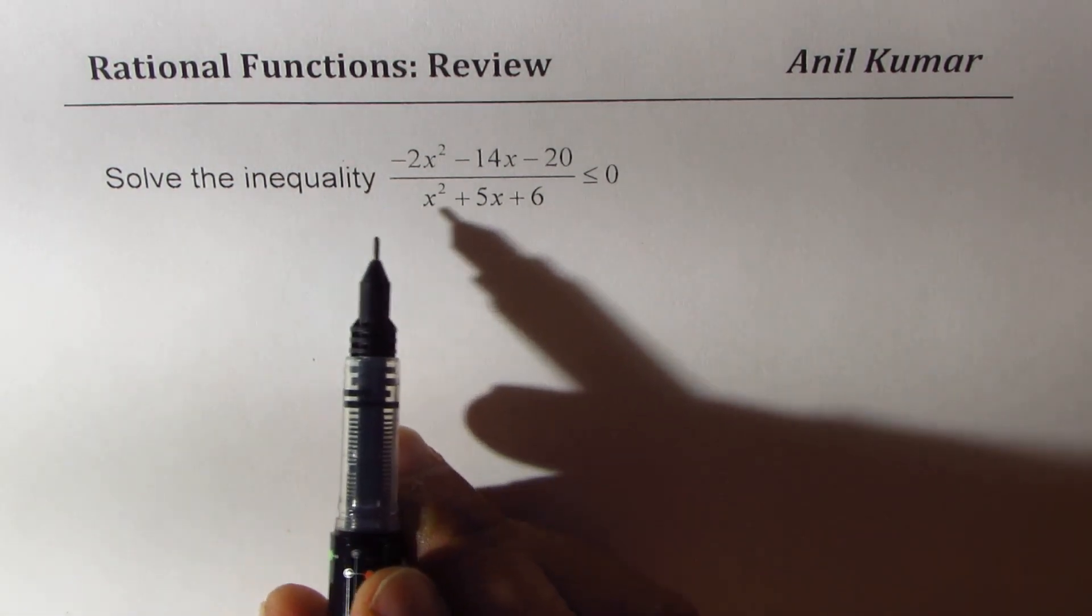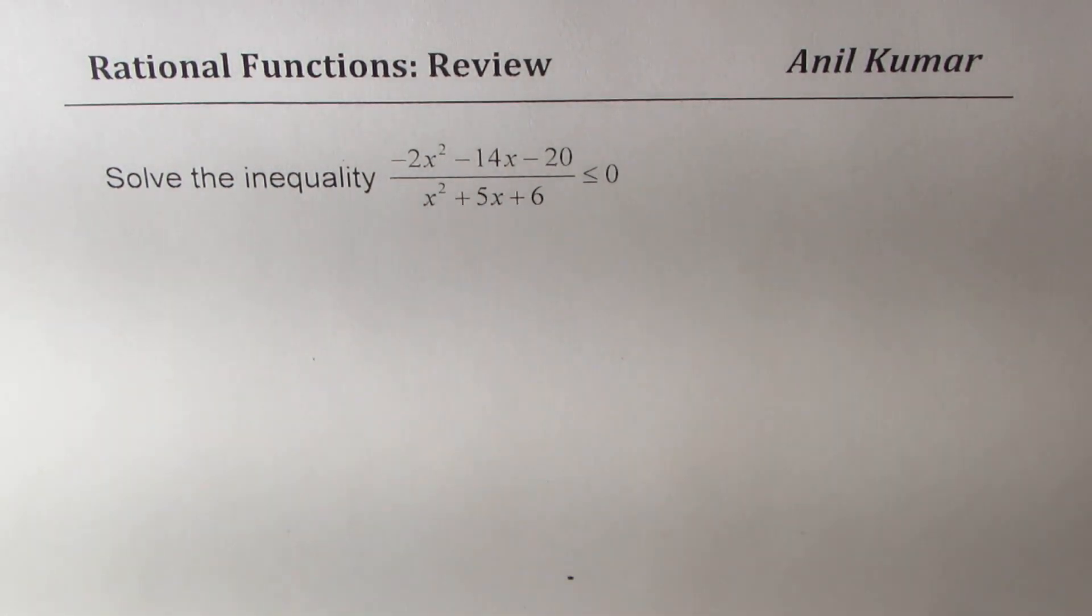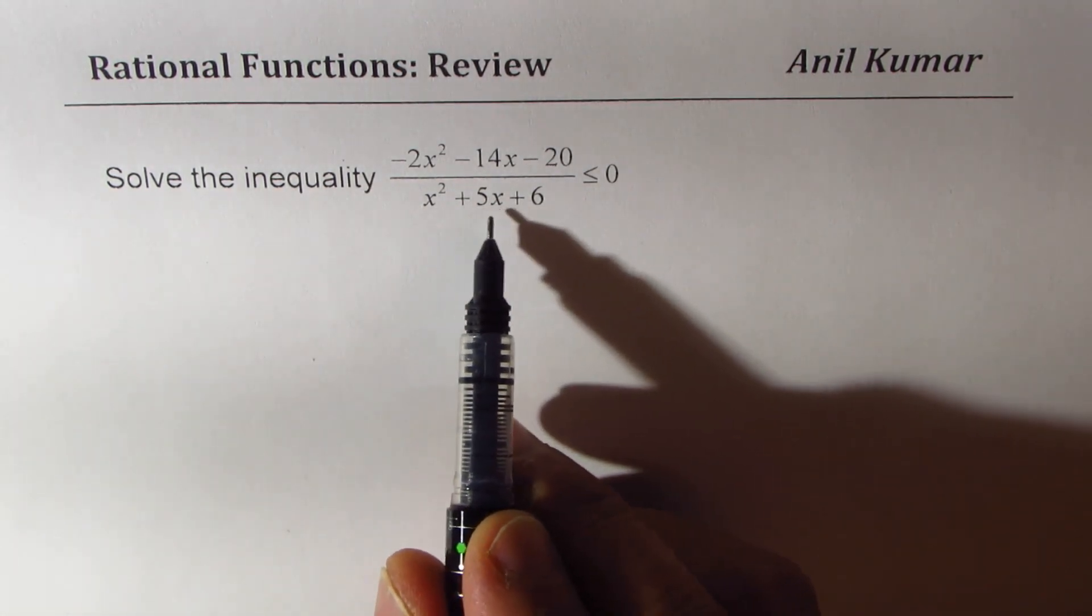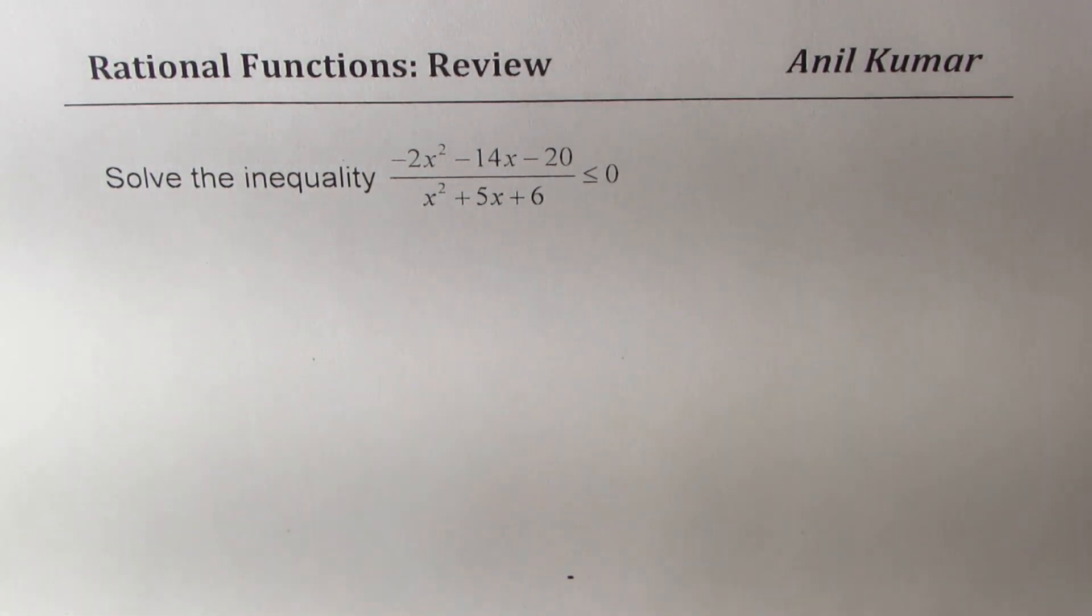We need to solve the inequality minus 2x square minus 14x minus 20 divided by x square plus 5x plus 6 less than equal to 0. You can always pause the video, answer the question and then look into my suggestions.